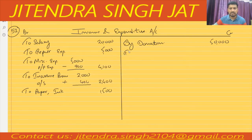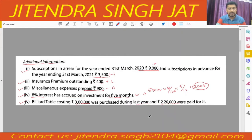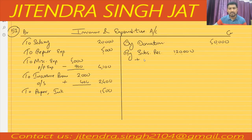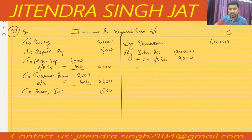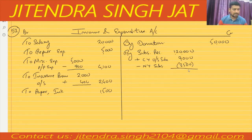Subscriptions: 1 lakh 20,000, with some adjustments given. Subscription received: 1,20,000. Adjustment: subscription in arrears for year ended 31st March 2020 is 9,000 — this is current year outstanding subscription, so we add 9,000. Then subscription in advance for year ending 31st March 2021 is 3,500 — this is next year's subscription so we subtract 3,500. Total: 1,20,000 + 9,000 = 1,29,000 minus 3,500 = 1,25,500.